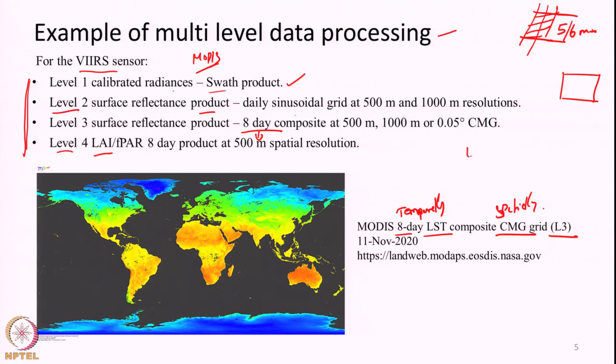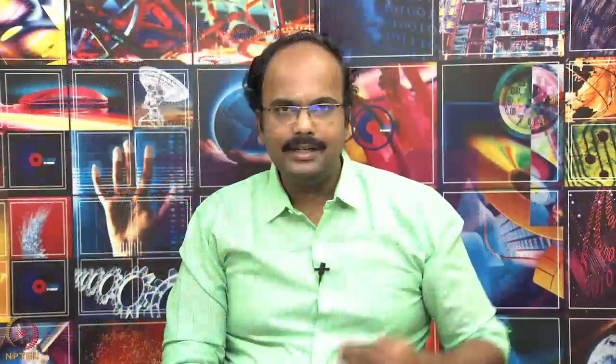An example shown is the MODIS 8-day land surface temperature composite in a CMG grid — both temporally and spatially aggregated, making it a level 3 data product. MODIS observes the earth every 1 to 2 days; at thermal bands the spatial resolution is roughly 1000 meters, and this is aggregated to 0.05-degree grids and averaged over 8 days. The resulting map shows blue portions as cold areas, yellow portions as slightly warmer, and red portions as hot desert areas. Like this, hundreds of different data products are available from optical sensors. In summary, this lecture has introduced various remote sensing data products, discussed different levels of data processing, and begun discussing optical datasets, which will continue in upcoming lectures.